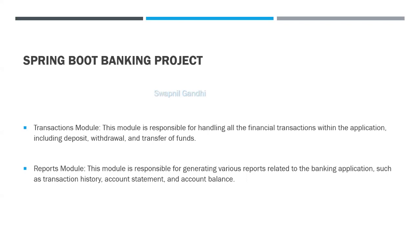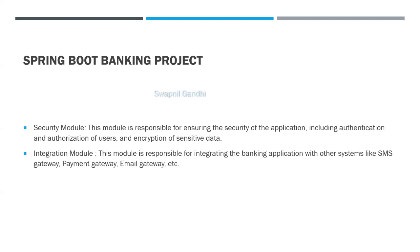The report module is one of the easiest to explain. You can say that you used the report module to export reports for customers to access, exporting them in PDF format — it is a good module to show. I would recommend avoiding the security module because it may lead to many follow-up questions. The integration module is safer — you can include email gateway, payment gateway, or SMS gateway, and explain that you created APIs for SMS sending using a third-party service and linked those APIs with your own.